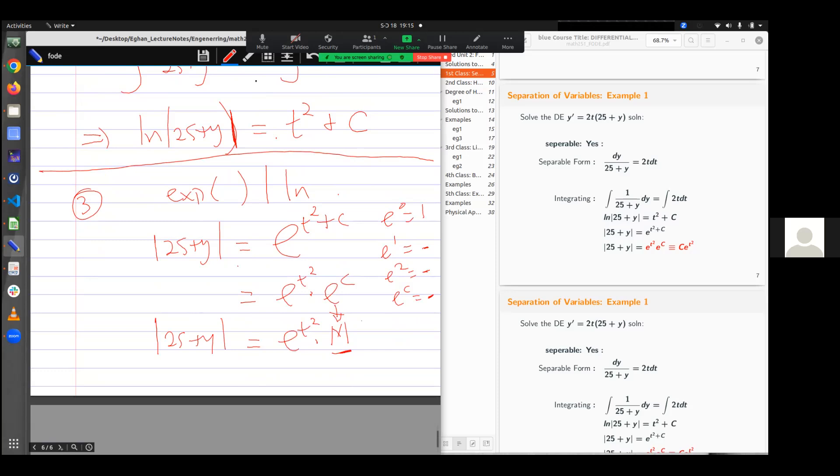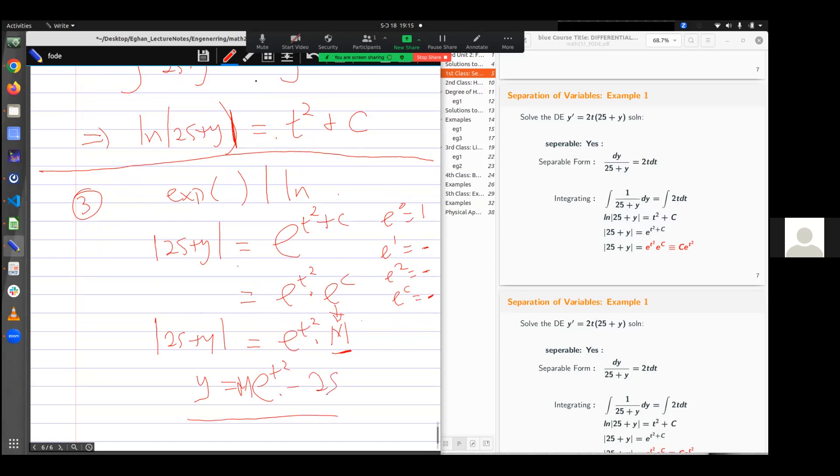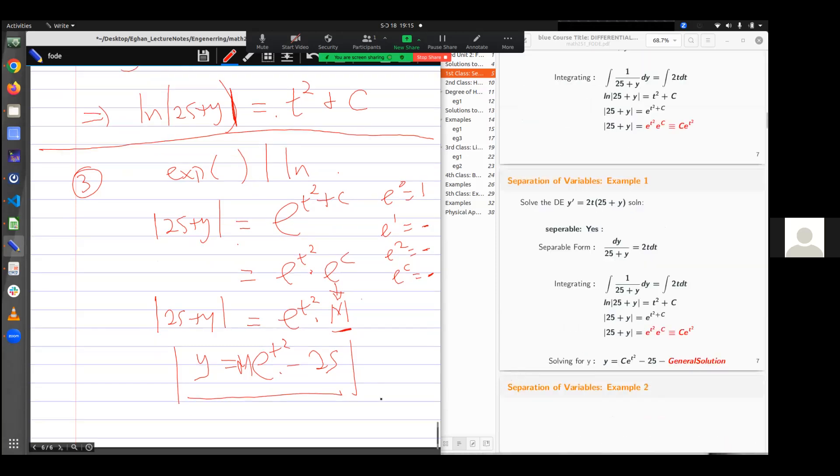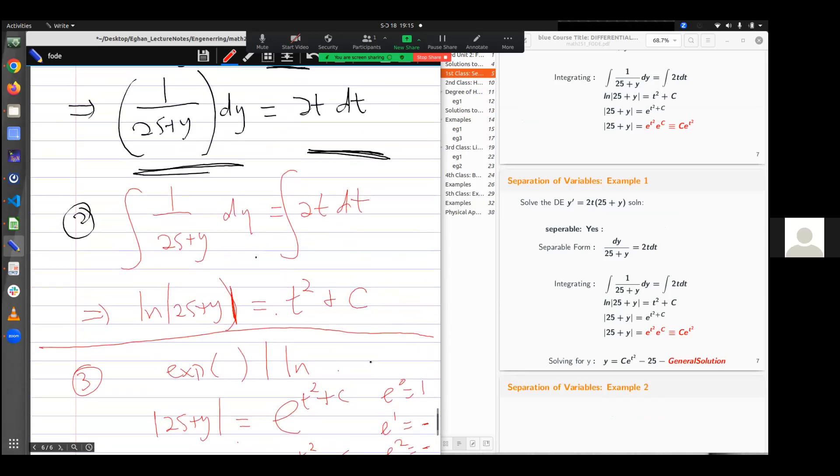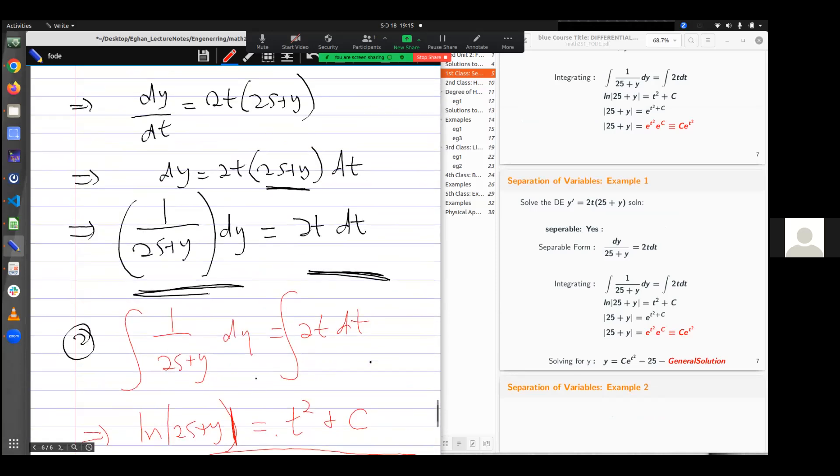Have I solved for the unknown? No. What I can do is solve for y. That would be equal to m*e^(t²) - 25. And this is my solution. And this is a general solution. So this is how you solve for separable equation. You must check that you can separate the terms.